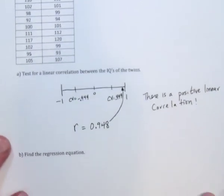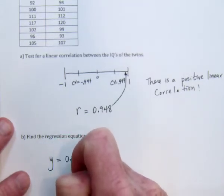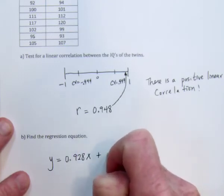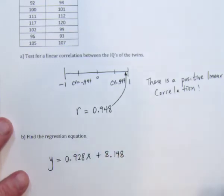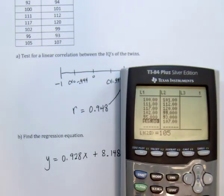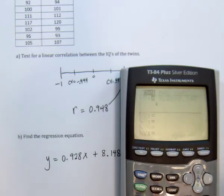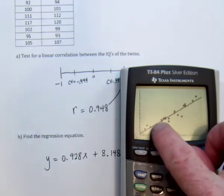Okay. So we're done with part A. Part B, find the regression equation. Well, that's the one we wrote down on the scratch paper earlier. Y equals 0.928x plus 8.148. So if we just go to Y equals, let me erase this old junk, and type in that equation 0.928x plus 8.148, and then go back to the graph. It will show you the scatter plot, and then it will show you the line of best fit, or the regression line. Basically, it's trying to go right through the middle of the dots.